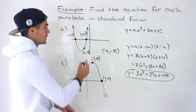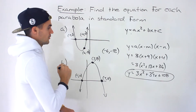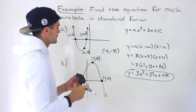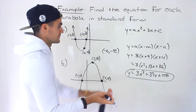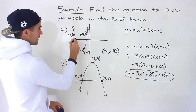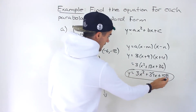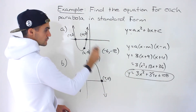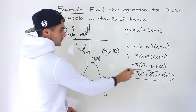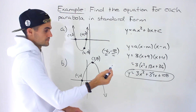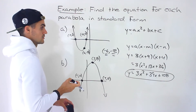If you graphed this in Desmos, you'd get this parabola, and you'd see it does go through the point negative 6, negative 18. To check your answer, if you have time on a test, plug in the x values of all the given points and make sure you get the corresponding y values. Plugging in negative 9 or negative 4 should give y equals 0, and plugging in negative 6 should give y equals negative 18.